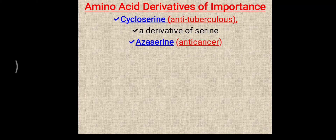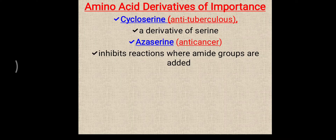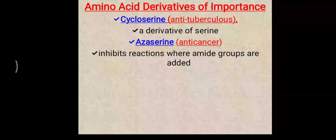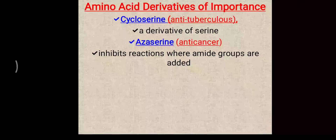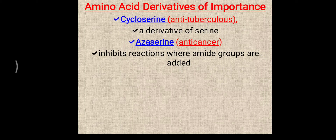Another important derivative of serine is azaserine, which works as an anti-cancer drug. Azaserine inhibits reactions where amide groups are added. In various reactions of DNA replication, amide groups need to be added, and that reaction is inhibited by azaserine. Serine is a hydroxyl group-containing amino acid.